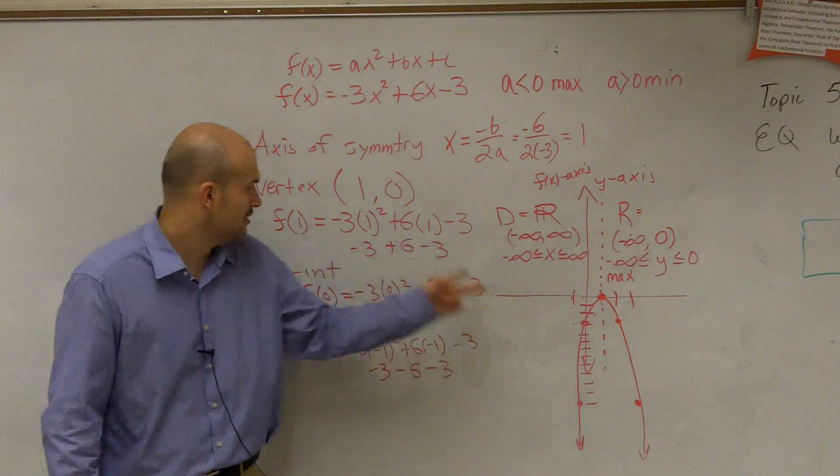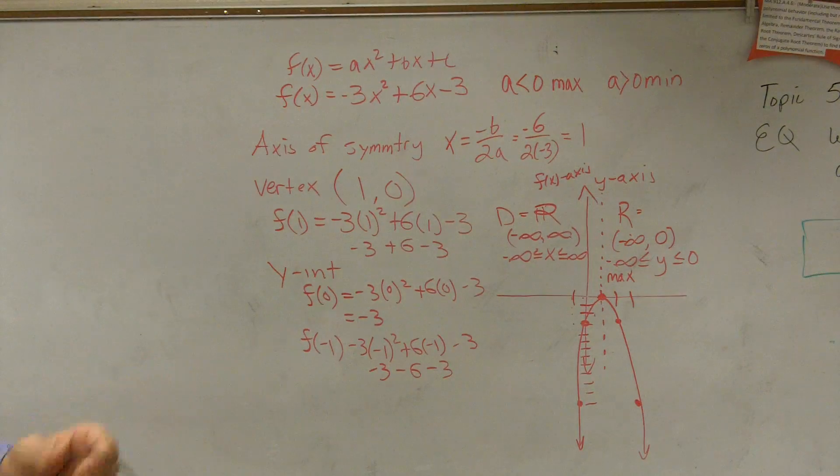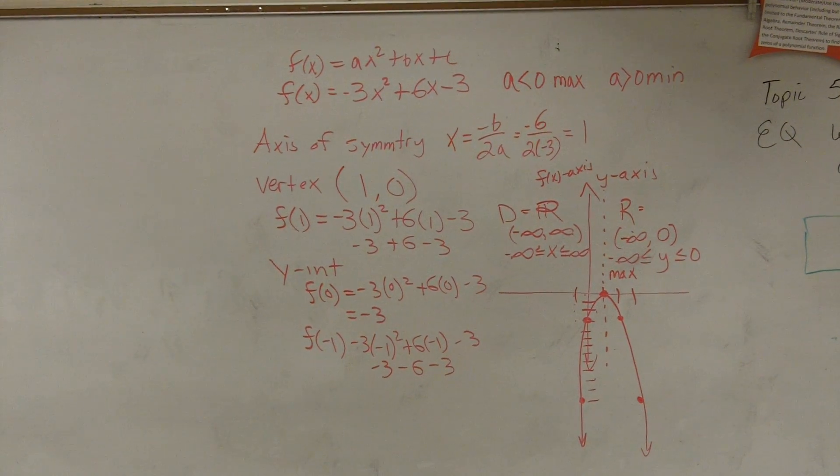You just need to write if it's maximum or min. But the point, what is that point? The point's your vertex, all right? That line, x equals one. Axis symmetry, x equals one.